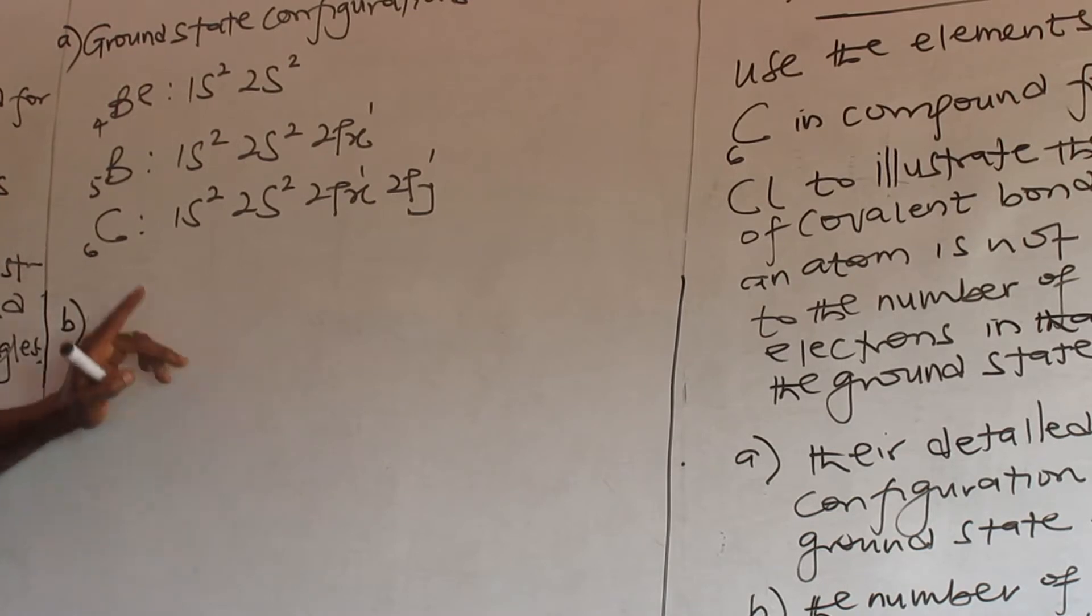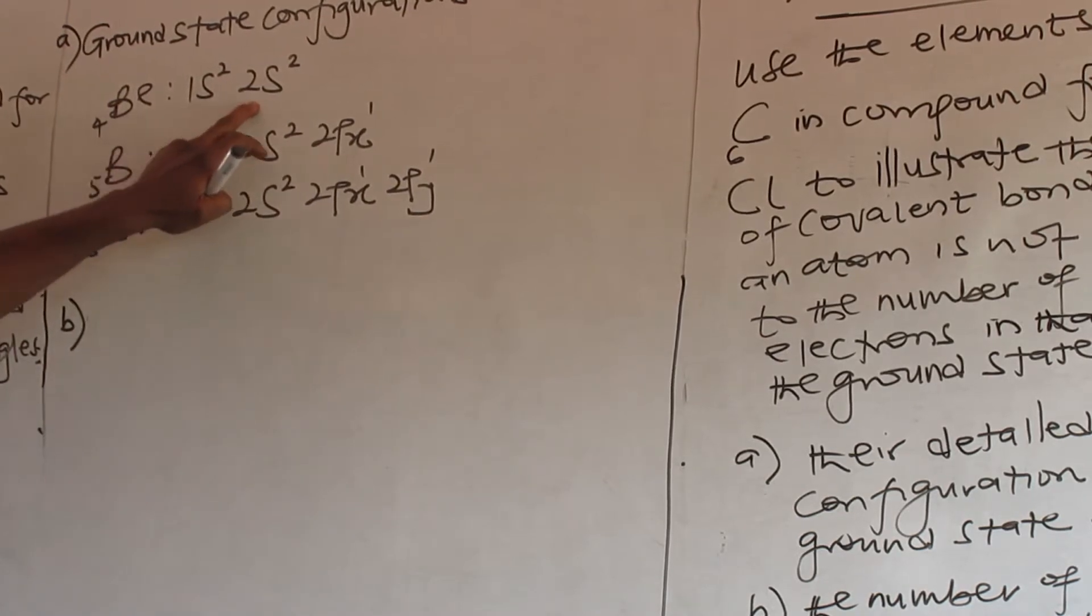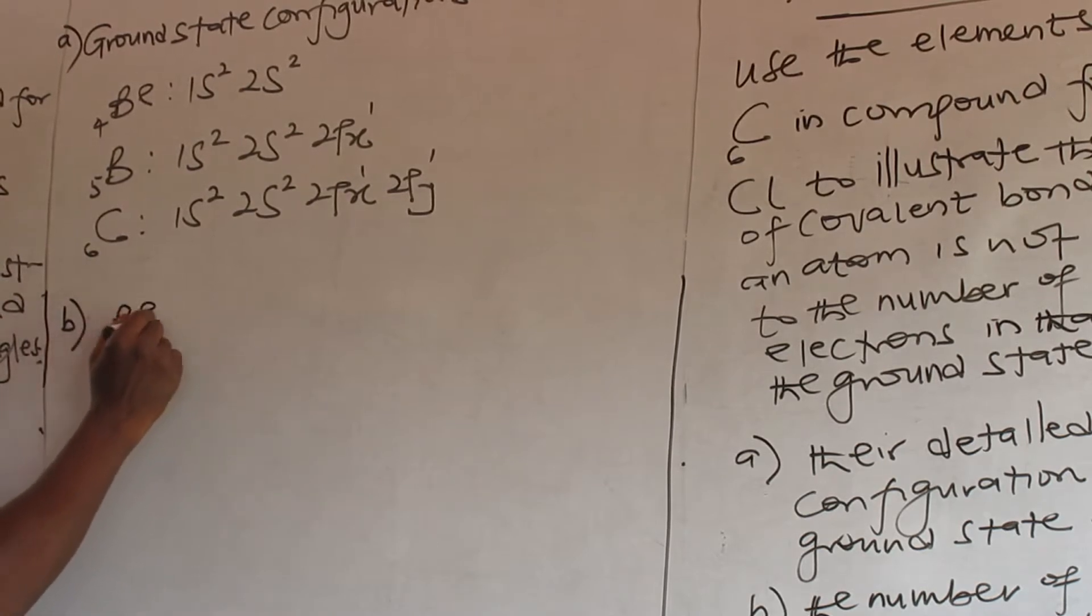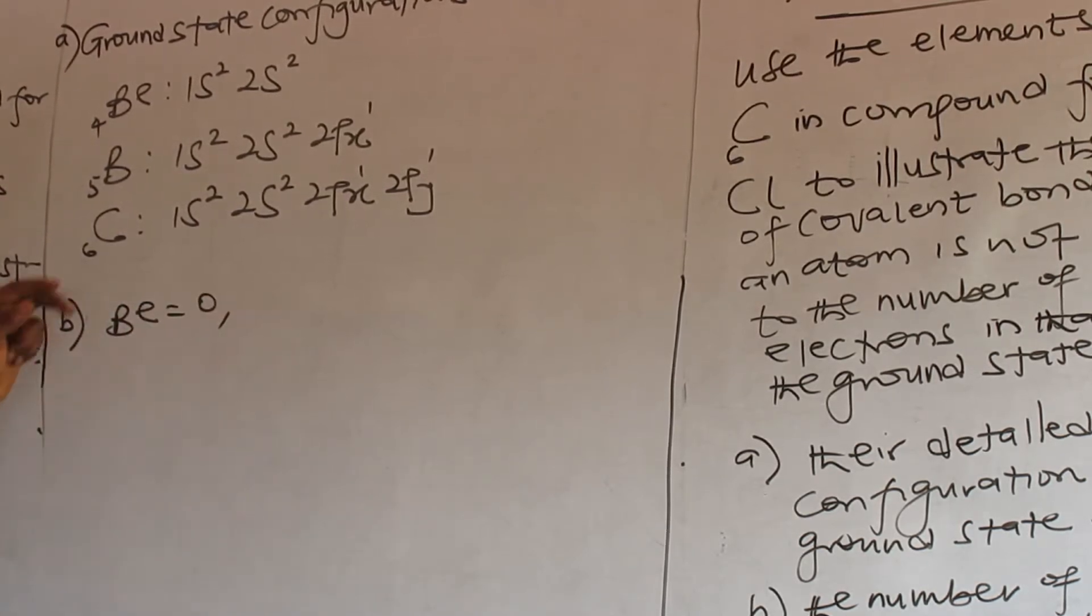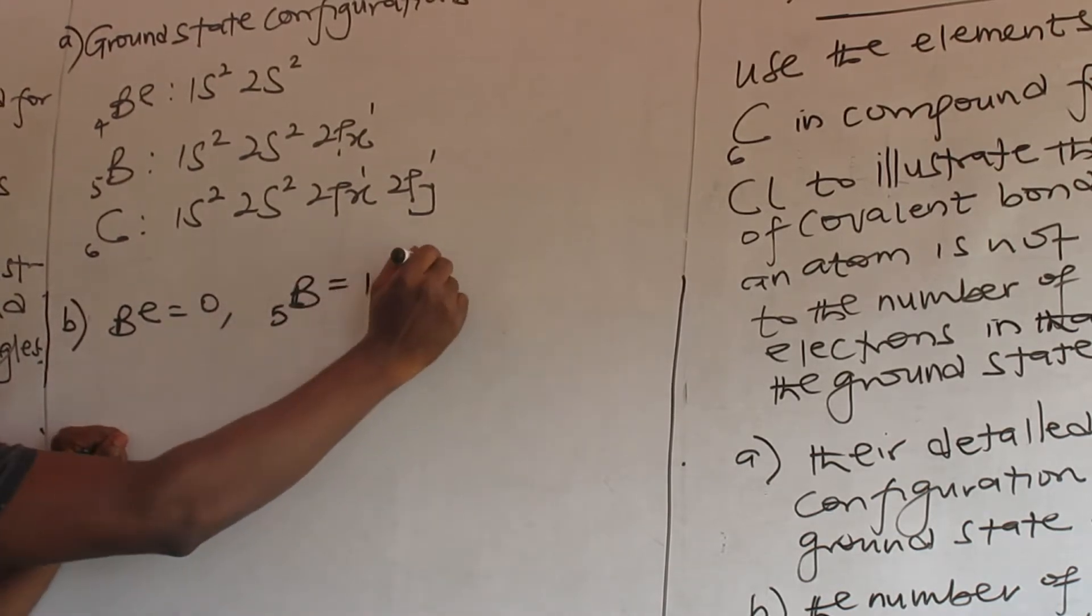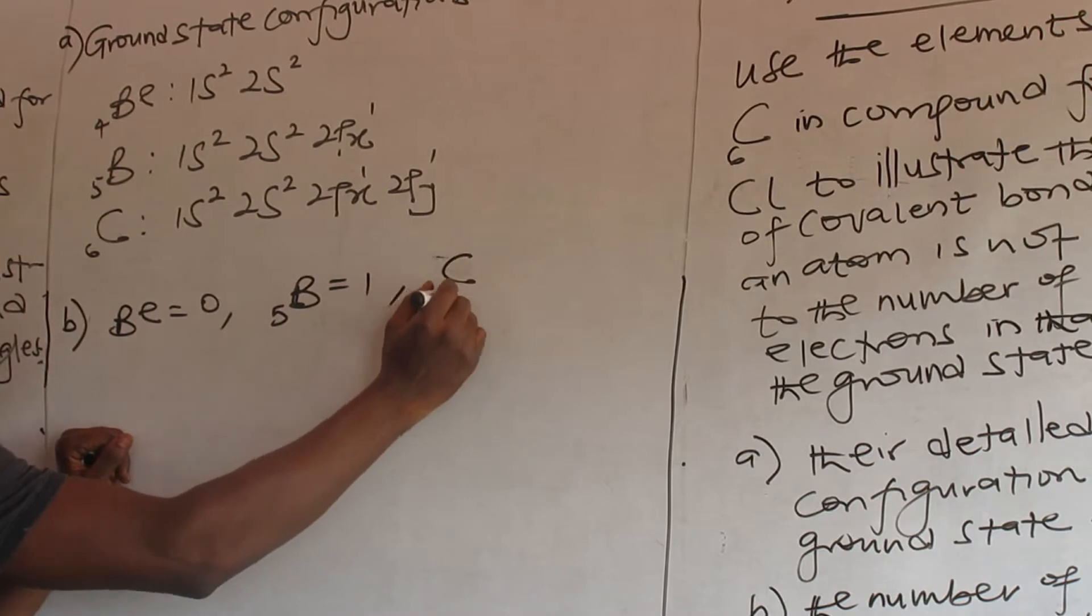Let's go. Look at this. How many unpaired electrons are here? They are all paired. So for the first one, I have zero. How many unpaired electrons are here? I have only one. How many unpaired electrons are here? Two.